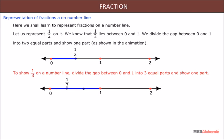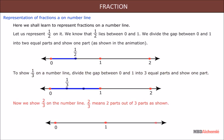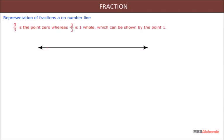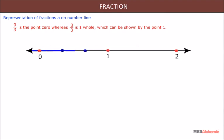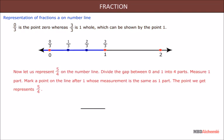Now we show 2 upon 3 on the number line. 2 upon 3 means two parts out of three parts as shown. 0 upon 3 is the point zero, whereas 3 upon 3 is one whole, which can be shown by the point one.